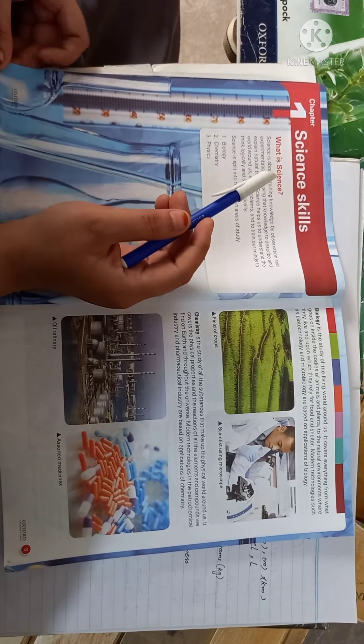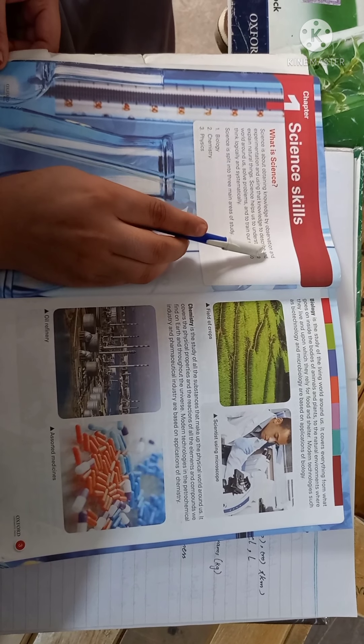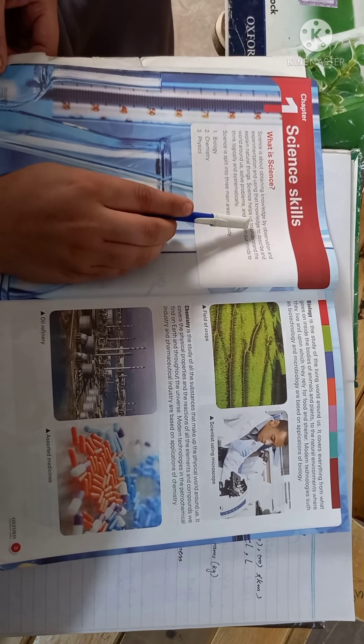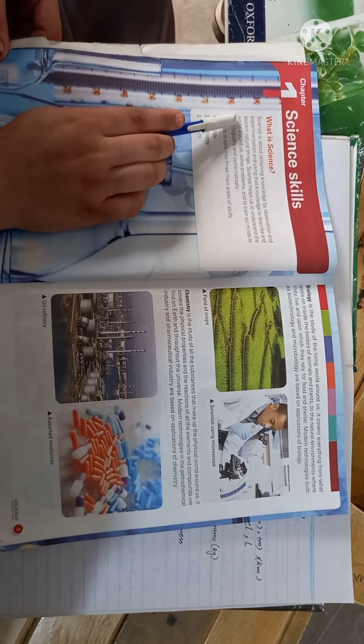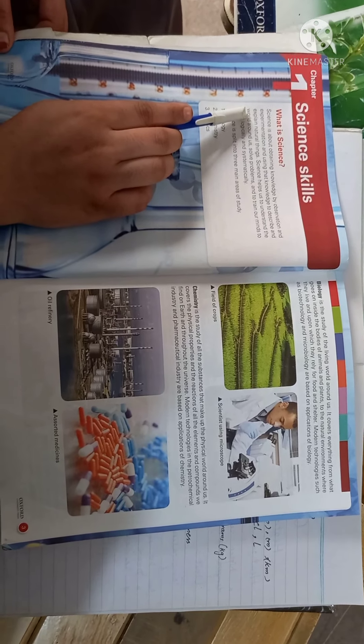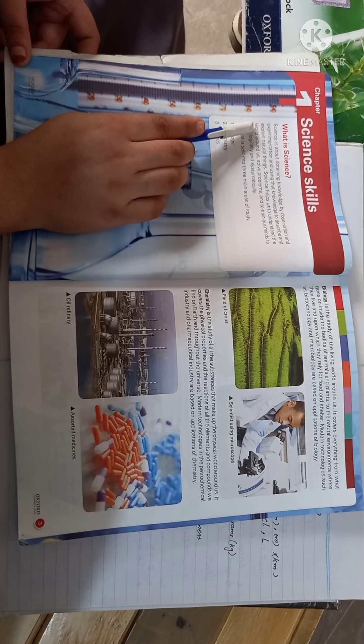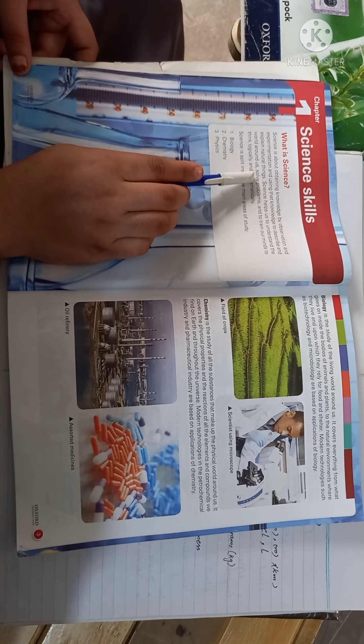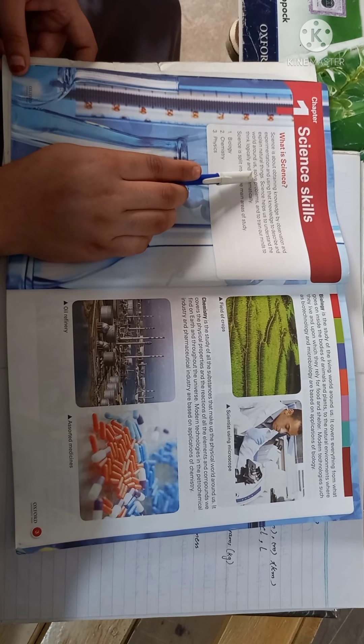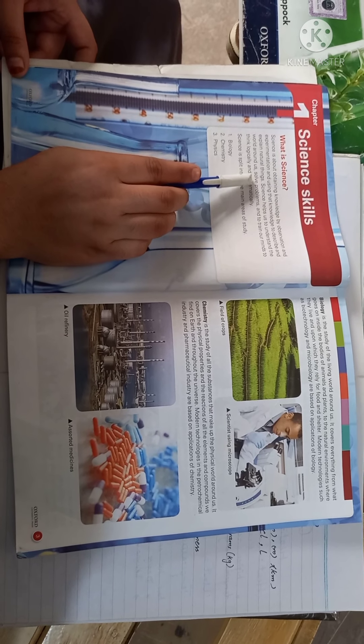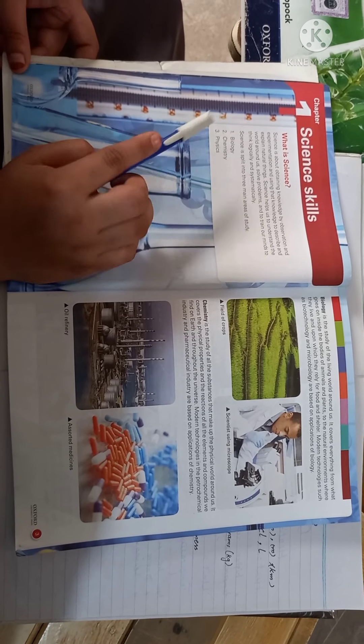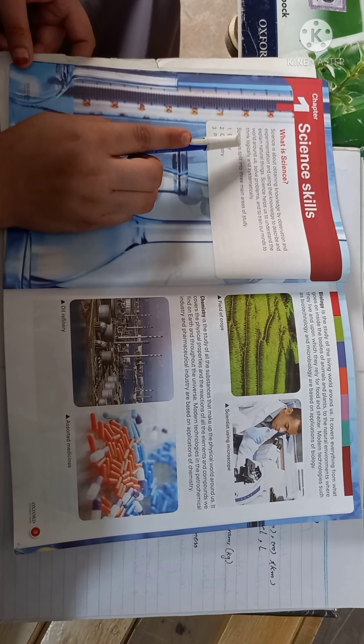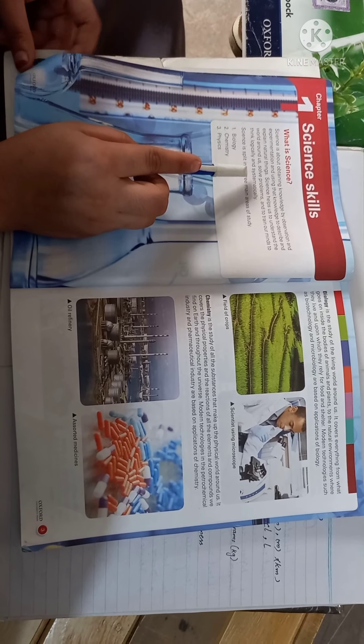Experiment using that knowledge to describe and explain natural things. Science helps us understand the world, which are non-living and living objects, to train our mind and our brain. Now our brain is also ready to be logical and systematic.